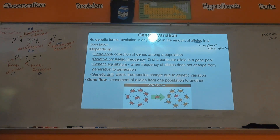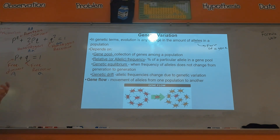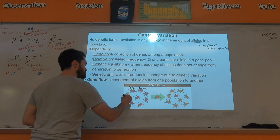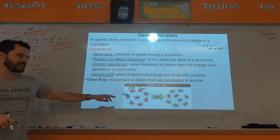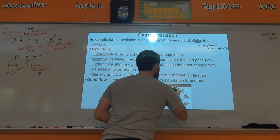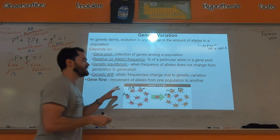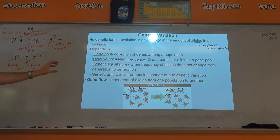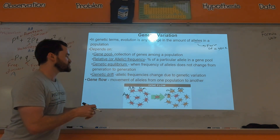Gene flow is the idea of the movement of alleles from one population to another. This picture summarizes it pretty well. In your population you'd have a bunch of alleles — like this beetle is homozygous dominant, this one is maybe homozygous recessive, this one is heterozygous. Maybe the other population has all beetles that are homozygous recessive — different percentages of genotypes in one population versus the next.